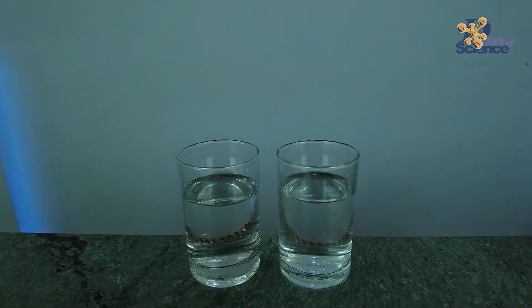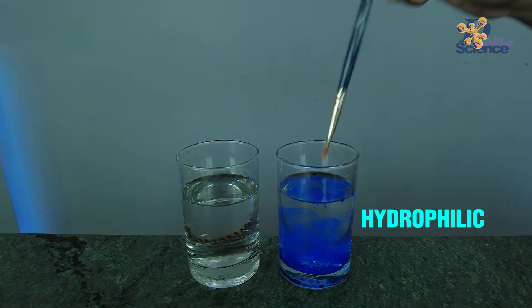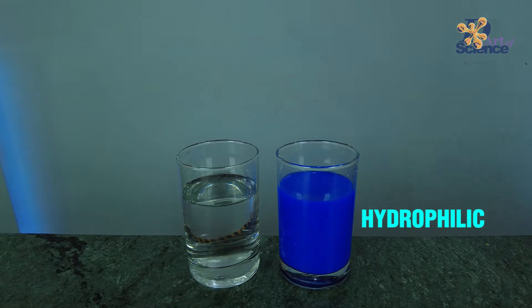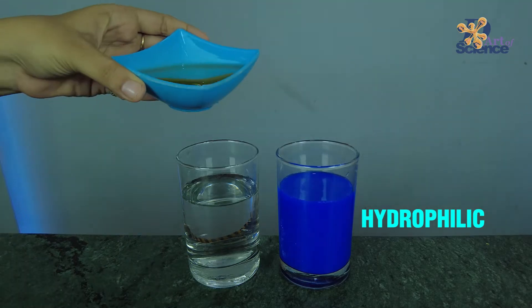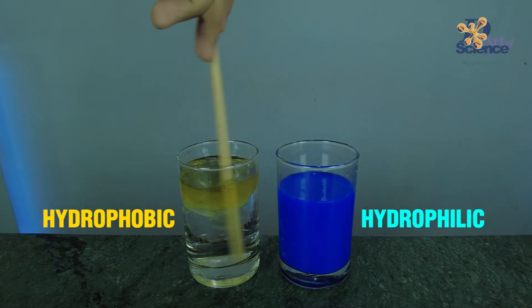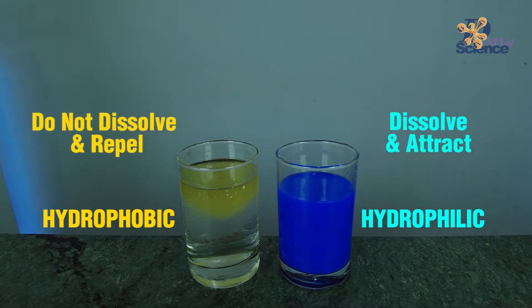Hydro means water. Hydrophilic substances like salt, milk, food coloring, and paint are attracted to water and so they dissolve or mix in water. On the other hand, substances like oil, wax, and grease are hydrophobic, which means they do not dissolve or mix in water. In fact, they repel water.